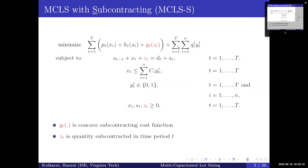We further extend this by adding an option of subcontracting, which is uncapacitated. Here, ZT is the amount subcontracted and GT is the concave subcontracting function. We call this generalized problem MCLS with subcontracting, or MCLSS.